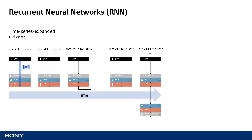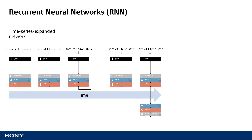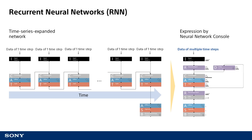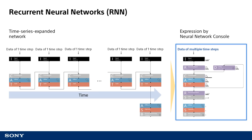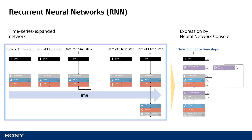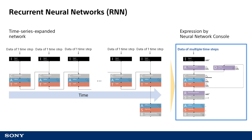RNN has such a structure that it can realize processing such as classification in consideration of time series while inheriting past information. When expressing RNN as a feed-forward neural network by expanding it in the time direction, it becomes quite complicated, especially in the structure of LSTM which I will explain in this video. Therefore, I would like to explain how to express RNN using the Neural Network Console. The RNN expanded in the time direction on the left and the expression using the Neural Network Console on the right represent the same network, allowing a compact and intuitive representation.